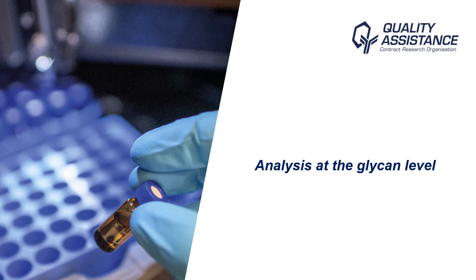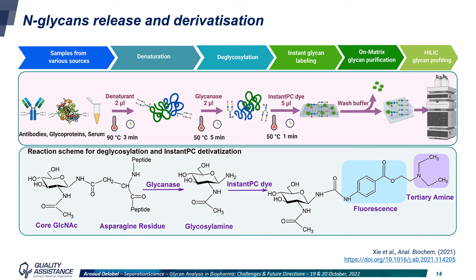I will now give a few examples, starting with the analysis at the glycan level, which is probably the most widely used approach for monoclonal antibodies, both for characterization and release testing. Over recent years, with the availability of new commercial labelling reagents, sample prep times have been drastically reduced, and it is now possible to prepare samples in less than an hour. Whatever the labelling reagent used, the workflow remains the same: first a denaturation step, then endoglycosylation with an enzyme that is most often PNGase F, derivatization with a reagent allowing both highly sensitive fluorescence and MS detection, and finally purification. These labelled glycans are then separated by LC and detected by fluorescence for quantification, and MS for identification.